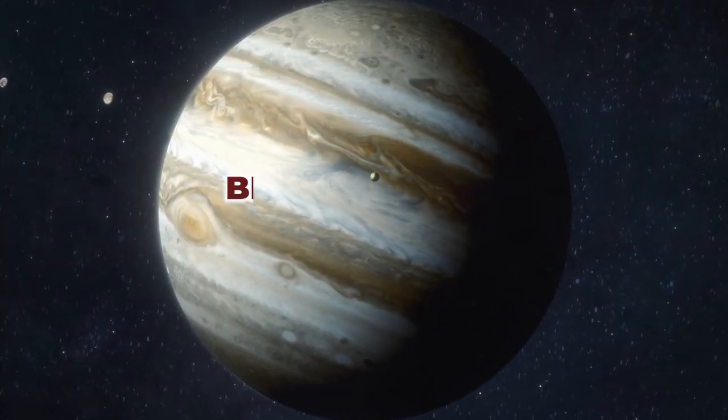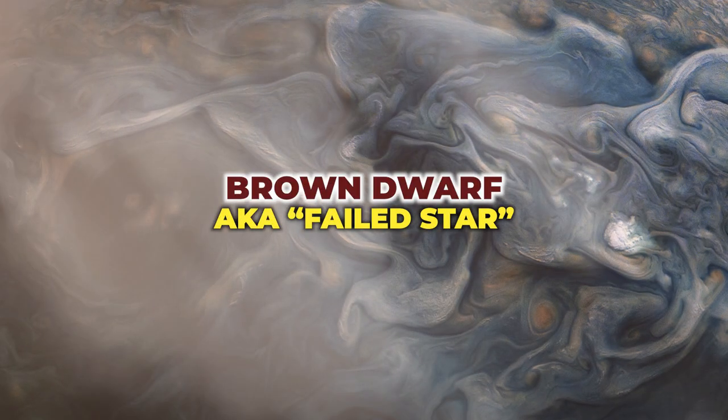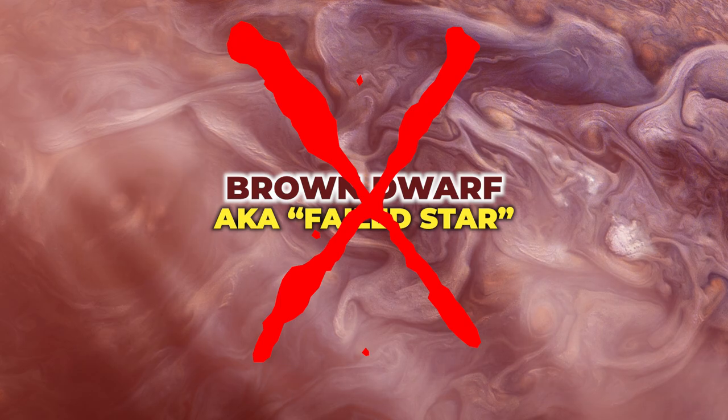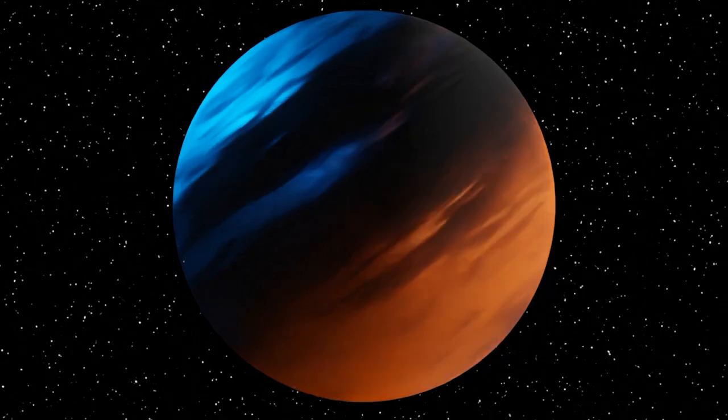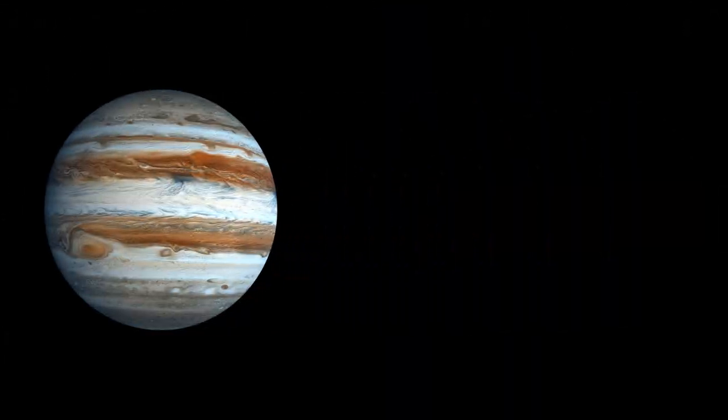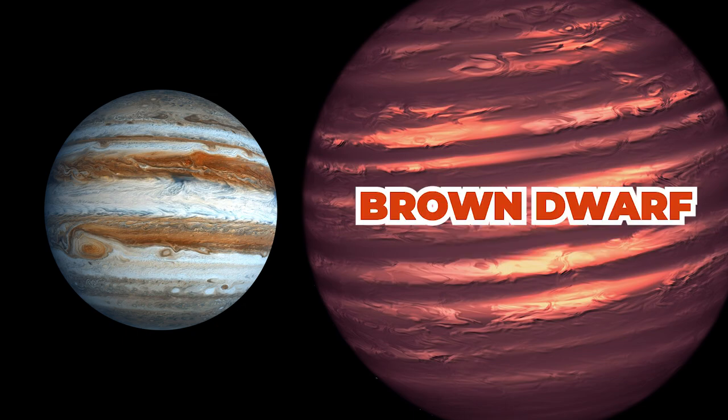Sometimes people call Jupiter a brown dwarf, also known as a failed star due to its size and mass, but that's just not true. While there's no official size classification for a brown dwarf, astronomers classify any object between 15 and 75 times the mass of Jupiter to be a brown dwarf.